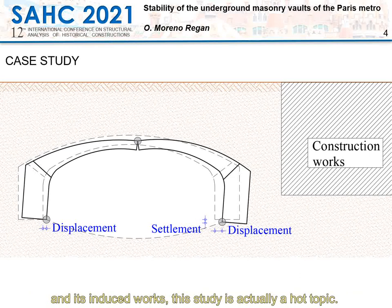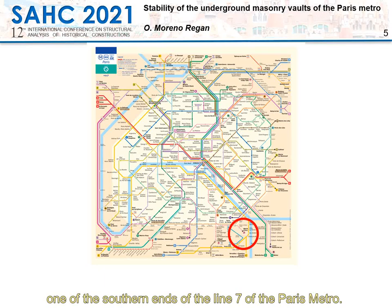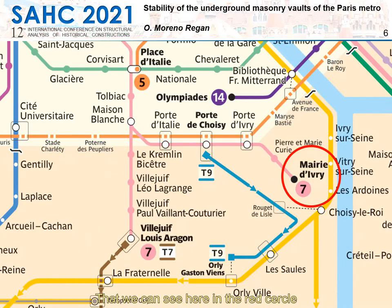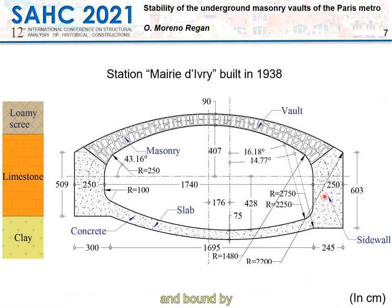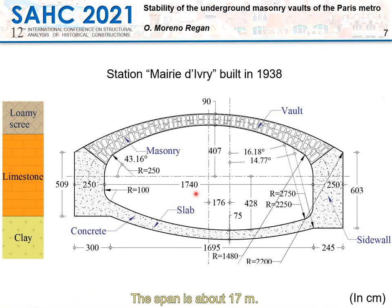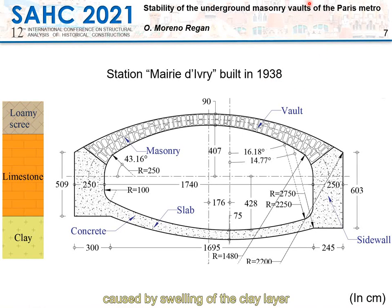Right now in Paris, with the construction of the new metro lines and its induced works, this study is actually a hot topic. Our study deals with the station Marie d'Ivry, one of the southern ends of line 7 of the Paris metro. The station was built with a semicircular masonry vault supported by two unreinforced concrete sidewalls and bound by a curved unreinforced concrete ground slab. The span is about 17 meters.